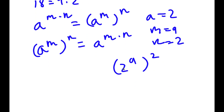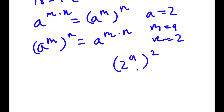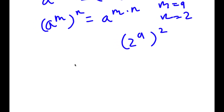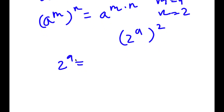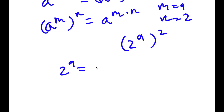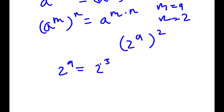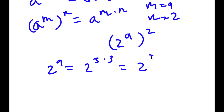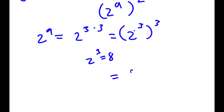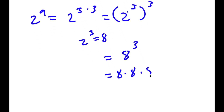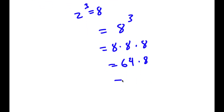So now I have 2 to the power of 9, to the power of 2. Let's first solve 2 to the power of 9. Using the same property, 2 to the power of 9 equals 2 to the power of 3 times 3, which equals 2 to the power of 3, to the power of 3. Now 2 to the power of 3 is equal to 8, so I have 8 to the power of 3, which is 8 times 8 times 8, equal to 64 times 8, which equals 512.